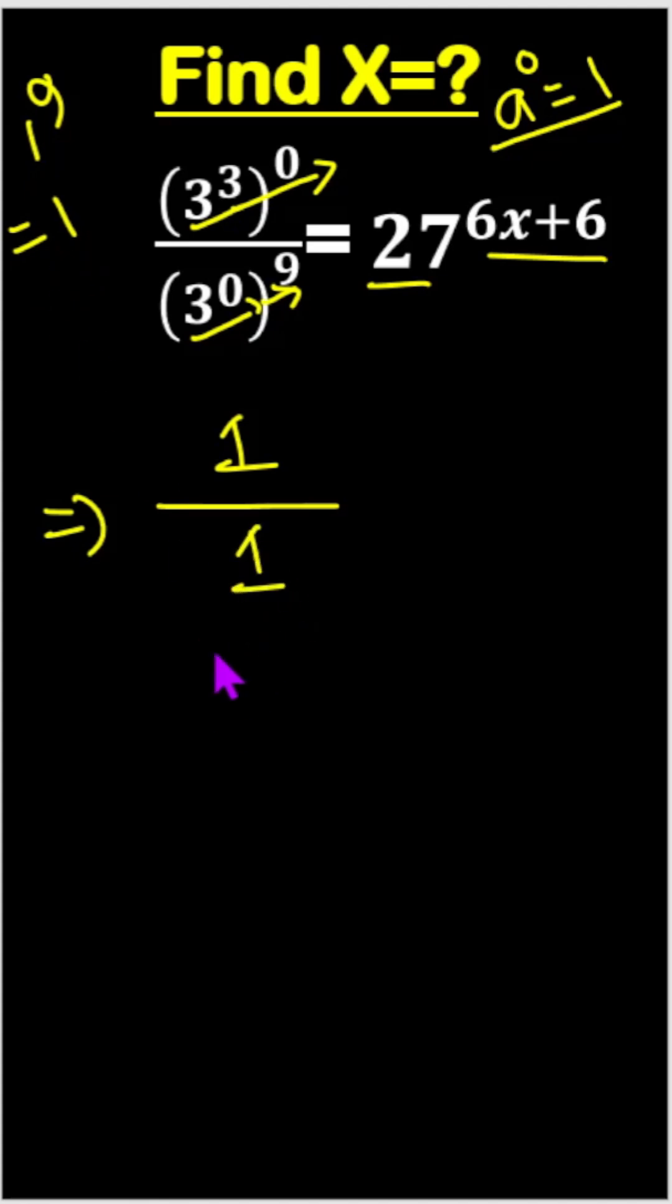And here, 27^(6x+6). So 1 divided by 1 equals 1, which equals 27^(6x+6).